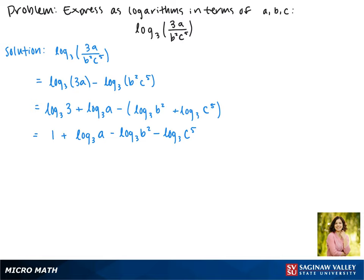Now we can rewrite exponents as being multiplied out front. This becomes 1 plus the log base 3 of a minus 2 times the log base 3 of b minus 5 times the log base 3 of c. And this is as simplified as we can make it.